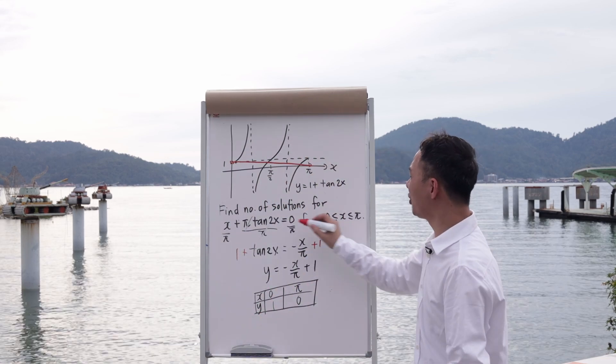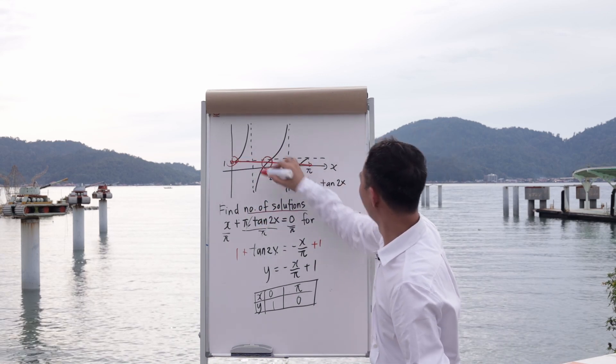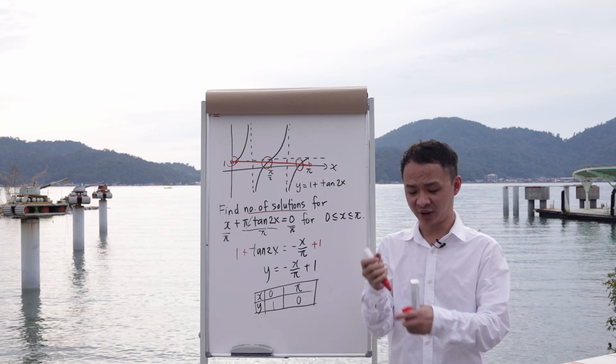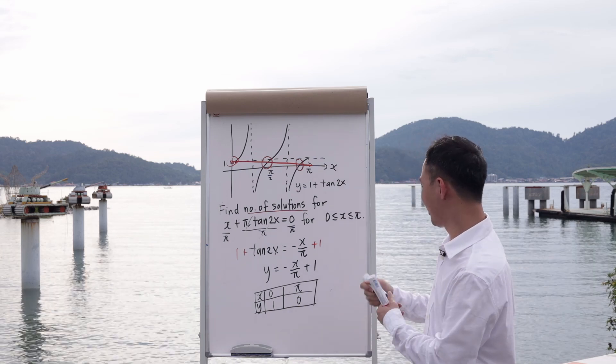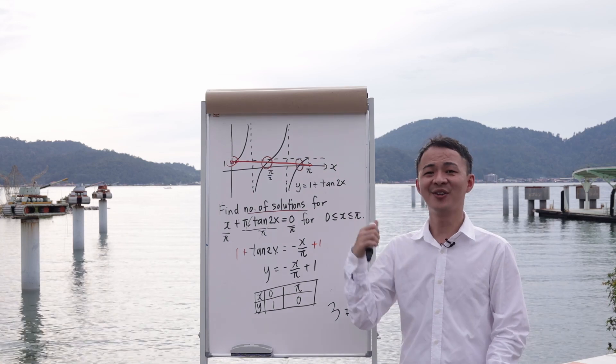And then after I draw this red color straight line, I will need to find the intersection point, which is the meaning of number of solutions. I have 1, 2, 3. So basically I have 3 intersection points. So my number of solution in this case will be 3. So this is my answer for this kind of questions.